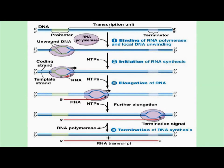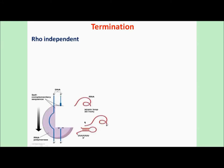Overall, the stages of transcription in prokaryotes are: first, binding of RNA polymerase and local DNA unwinding; then initiation of RNA synthesis; followed by chain elongation; and finally termination. Termination of transcription in prokaryotes takes place through two defined pathways — the Rho-independent pathway and the Rho-dependent pathway.